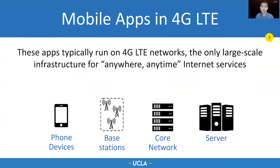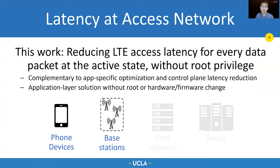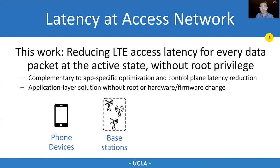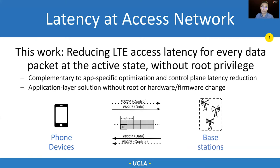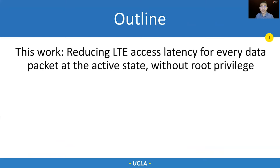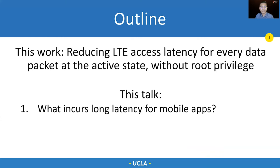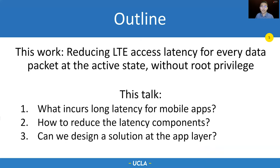A key challenge to serve these mobile applications is to meet their latency demand. This work aims at reducing LTE access network latency, which is complementary to application-specific optimization and control plane latency reduction. In the access network, LTE divides the channels into time-frequency units called resource blocks, where base stations and devices modulate their data. To reduce the latency, we attempt to answer three concrete questions: first, what are the latency elements? Second, how to reduce each of them? And third, is it possible to deliver an application layer solution without root privilege?